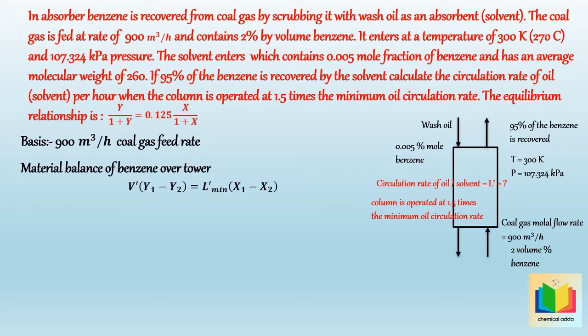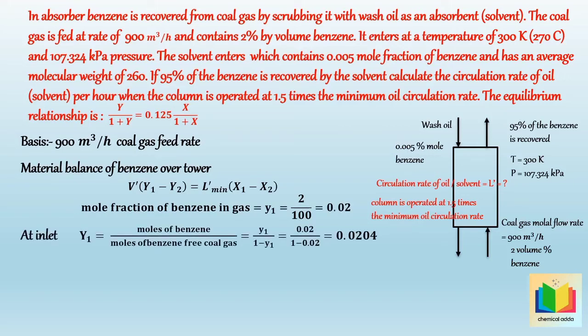Let's first calculate Y1. As given in this problem, the inlet gas contains 2% by volume benzene. Hence the mole fraction of benzene in inlet gas, that is y1, is equal to 2 divided by 100, which is equal to 0.02. From this we can calculate the mole ratio Y1, which is equal to moles of benzene divided by moles of benzene-free coal gas, which equals y1 divided by (1 minus y1). After solving we get Y1 is equal to 0.0204.